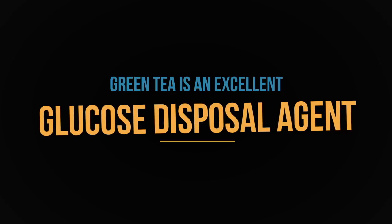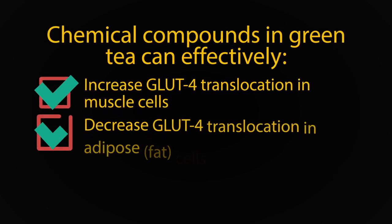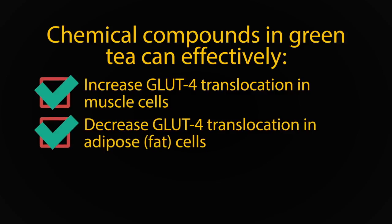Green tea is an excellent glucose disposal agent, which means that it'll increase your insulin sensitivity. Chemical compounds in green tea can effectively increase glucose translocation to the muscle cells and decrease the same process in fat cells.